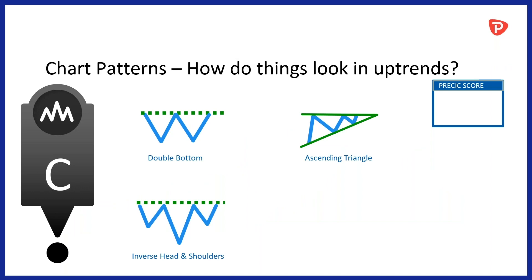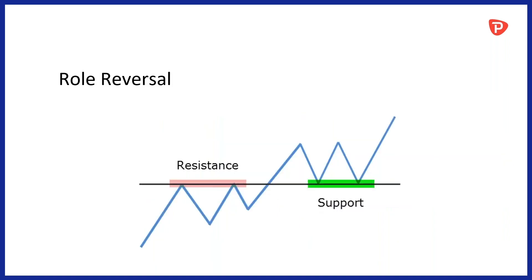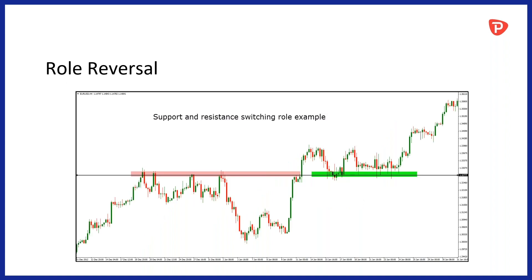Different chart patterns in uptrends that we really like: ascending triangles, double bottoms, inverse head and shoulders, and flags — we love flags. They're a really great pattern especially when markets are trending, and they give great take profit levels. Role reversal is something we talk about all the time — where support becomes resistance or resistance becomes support. Whether you're trading a 15-minute, one-hour, four-hour, daily, or weekly chart, definitely learn more about role reversal.